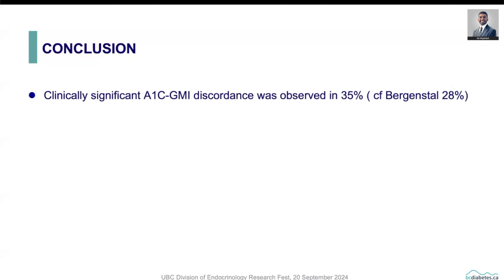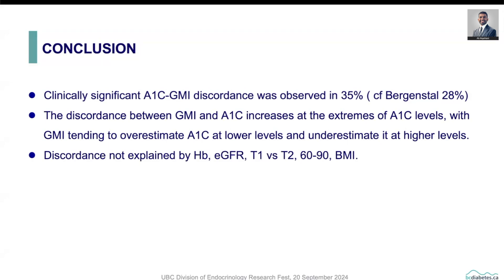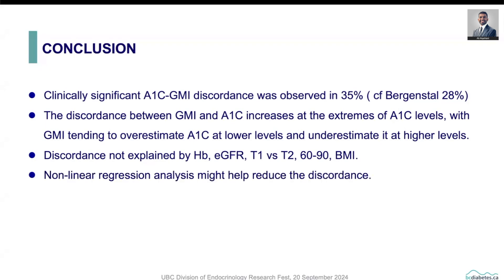In conclusion, clinically significant A1C-GMI discordance was observed in 35 percent of our cohort, compared to 28 percent in the Bergenstal analysis. The discordance between GMI and A1C increases at the extremes of A1C level, with GMI tending to overestimate A1C at lower levels and underestimate it at higher levels. Discordance was not explained by hemoglobin, estimated GFR, type of diabetes, 60 versus 90 days of data, or BMI. Nonlinear regression analysis might help to reduce the discordance.